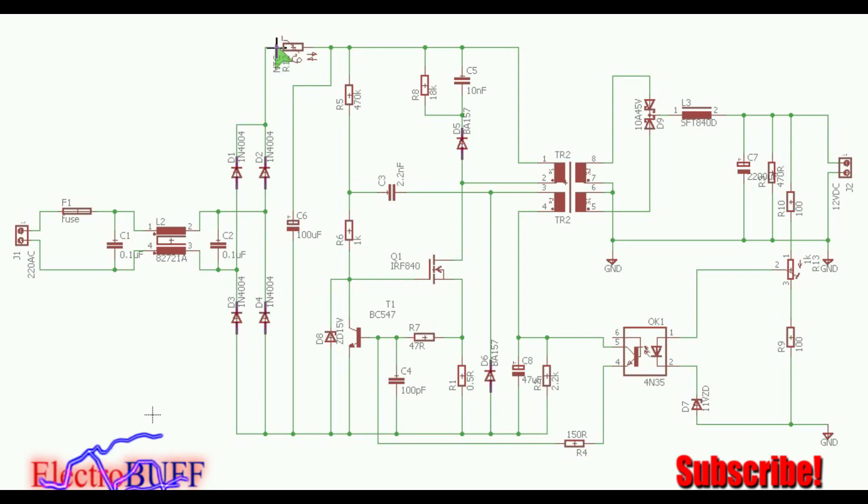Then there's a thermistor to limit the inrush current when the power supply is turned on and the input bulk capacitor begins to charge up. So the main switching device is this MOSFET. You can use the IRF 840.